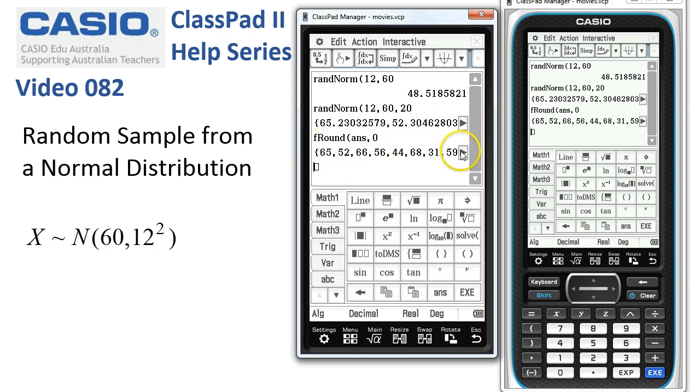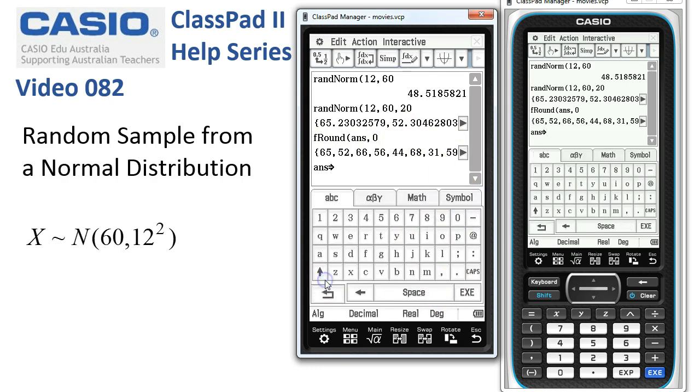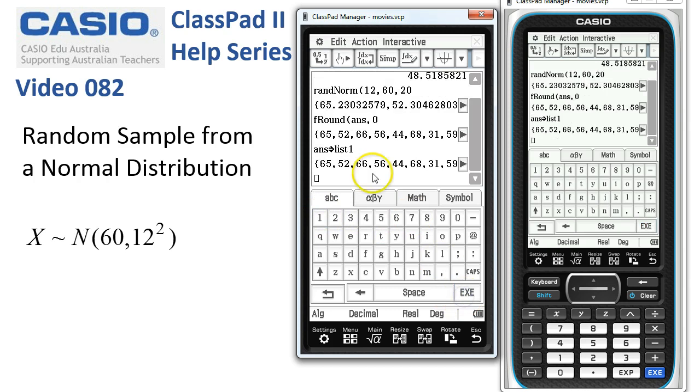For analysis of our data, if we wanted to do anything with them, the best thing is to take the answer and store them into List 1. So I've got Answer and the store symbol. I'll type in List 1 and tap Execute. And now they've all been stored into List 1.